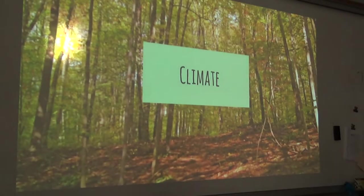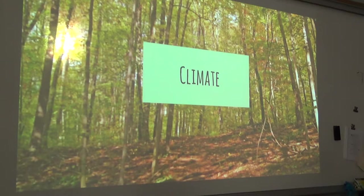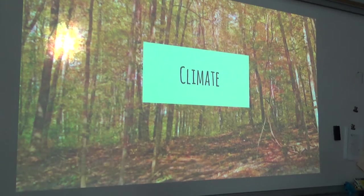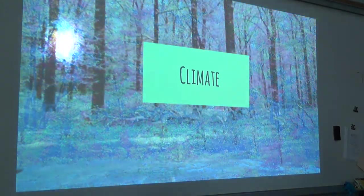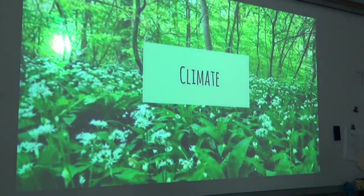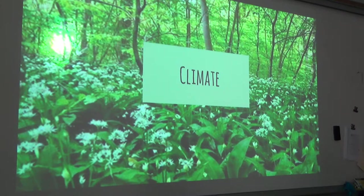The climate of the temperate deciduous forest is a very moderate one because they are located in between both the tropics and the polar regions. This central location is the reason they experience all four seasons: summer, fall, winter, and spring. Precipitation falls throughout the year — as rain in the spring, summer, and fall, and as snow in the winter — with an average of 30 to 60 inches per year. Summers tend to be mild with averages of about 70 degrees, and winters are fairly cool with averages below freezing.